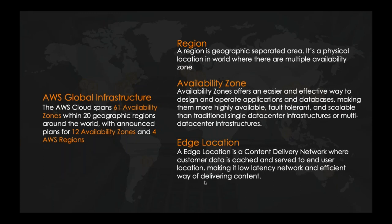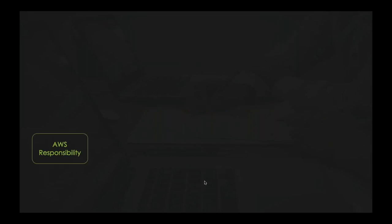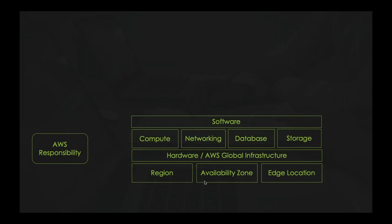One of the most important parts is the shared responsibility model — what AWS is responsible for and what you are responsible for. AWS is responsible for maintaining the hardware and global infrastructure like regions, availability zones, and edge locations. They are also responsible for software services like computing, networking, database, and storage — these are the four core services. Maintaining all hardware and software required to create EC2 instances, VPC, and other services is AWS's responsibility.